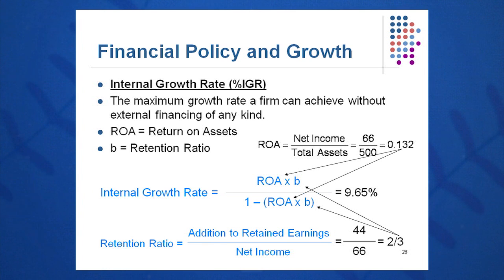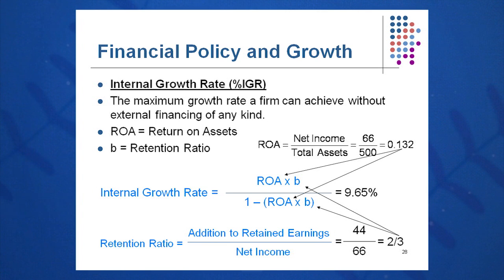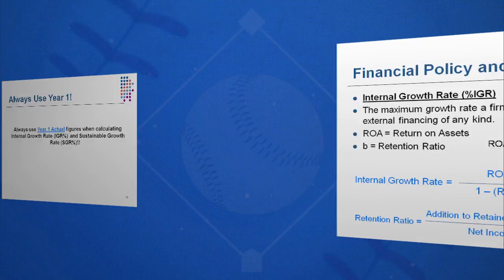The internal growth rate is calculated by taking return on assets times B, divided by one minus the quantity return on assets times B — ROA × B / (1 − ROA × B). I have to go to the income statement and the balance sheet, look at the numbers, and plug them in to get the internal growth rate.